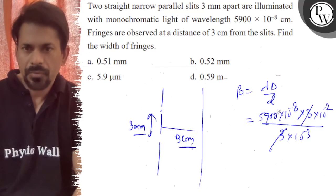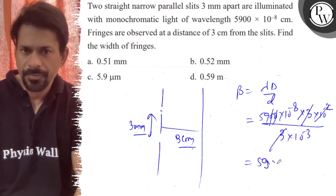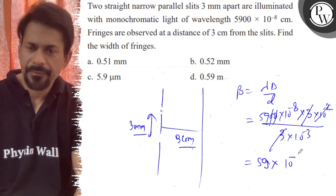3 to 3 is gone. 10 to minus 2 is gone here. That is equal to 59 × 10^-5.